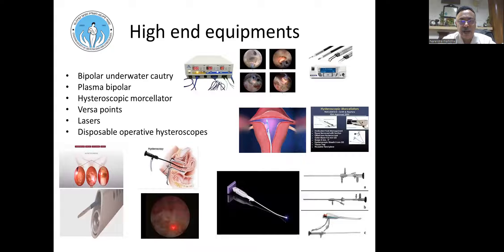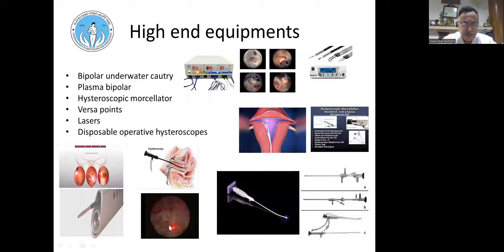For high-end procedures, we need bipolar underwater cautery, plasma bipolar cautery, a hysteroscopic morcellator, Versapoint, lasers, and disposable operative hysteroscopes. Here is a laser and a laser point that is introduced. So for advanced work you need complex bipolar equipment, and scopes can be either disposable or reusable.